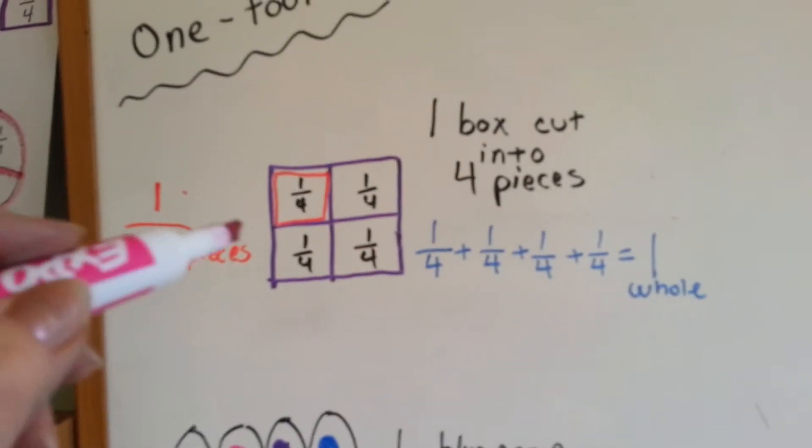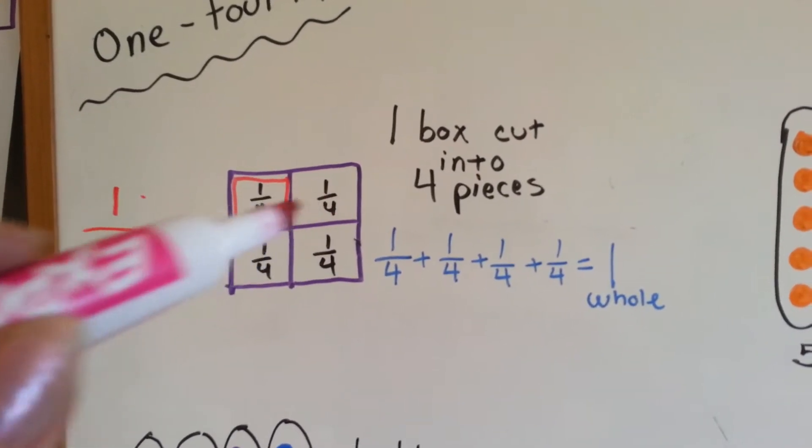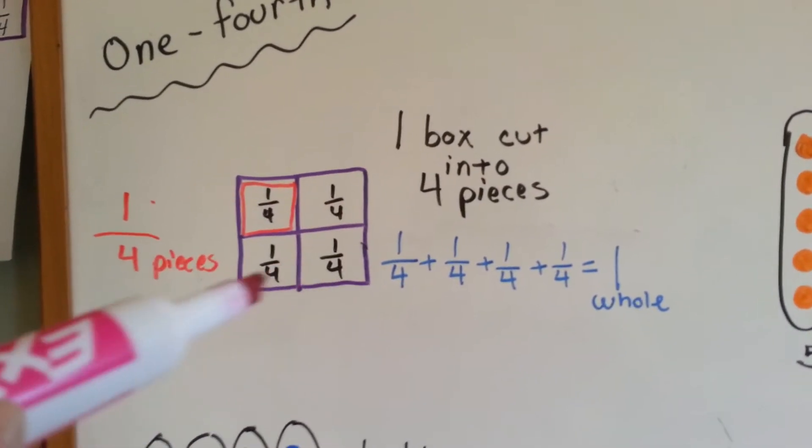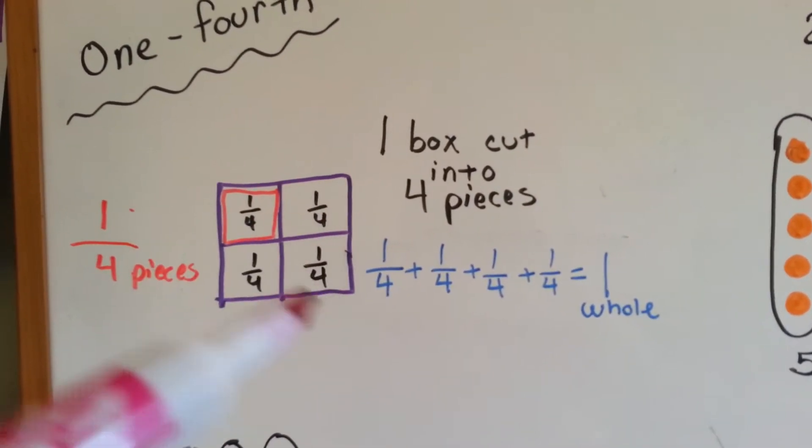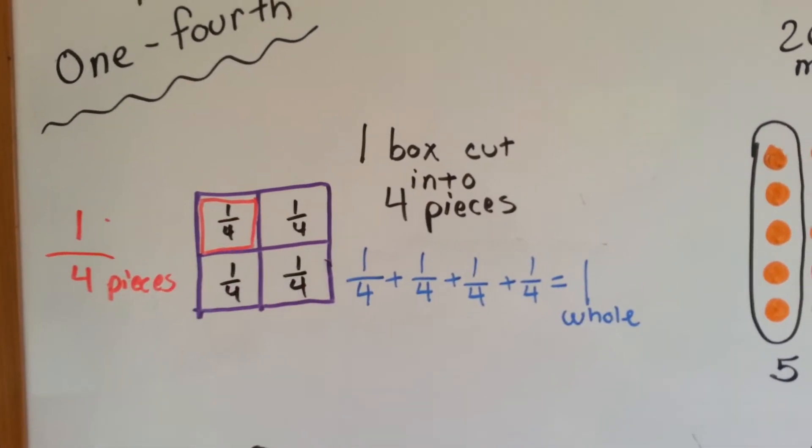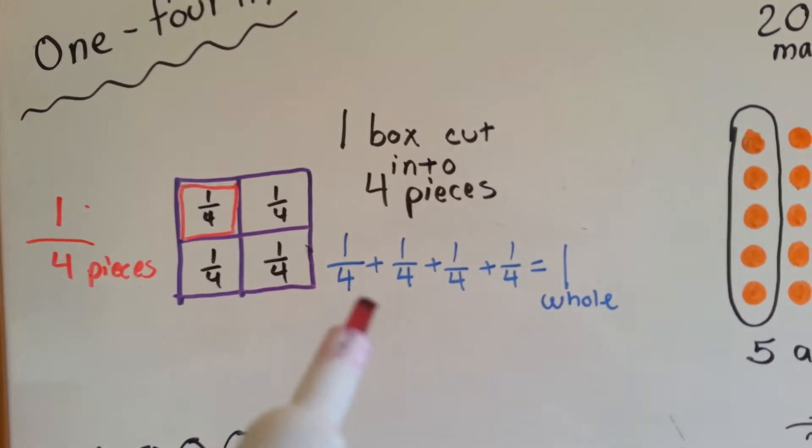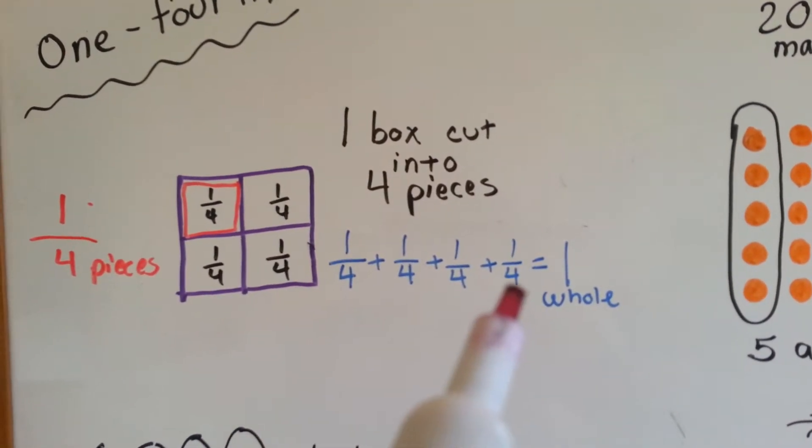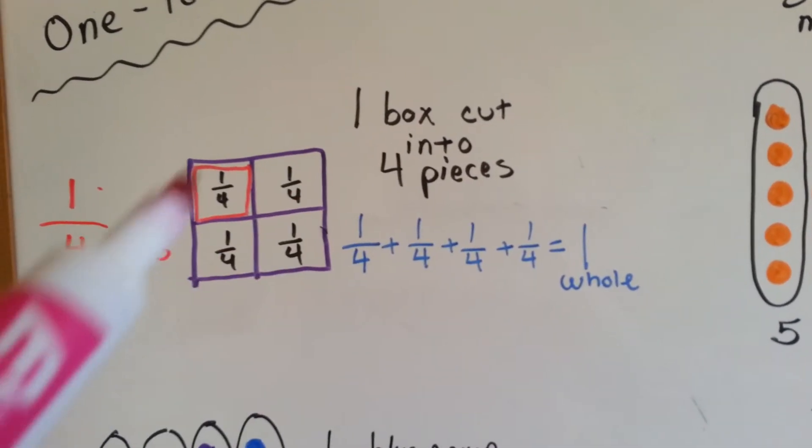I have a purple box and I cut it into four pieces. One, two, three, four. Each one of these pieces is one-fourth of the box. Four pieces, one of the pieces is one-fourth. They're all fourths of a whole box. If you add one-fourth plus one-fourth plus one-fourth plus one-fourth, you get one whole. When you add all of these together, you get the whole box.